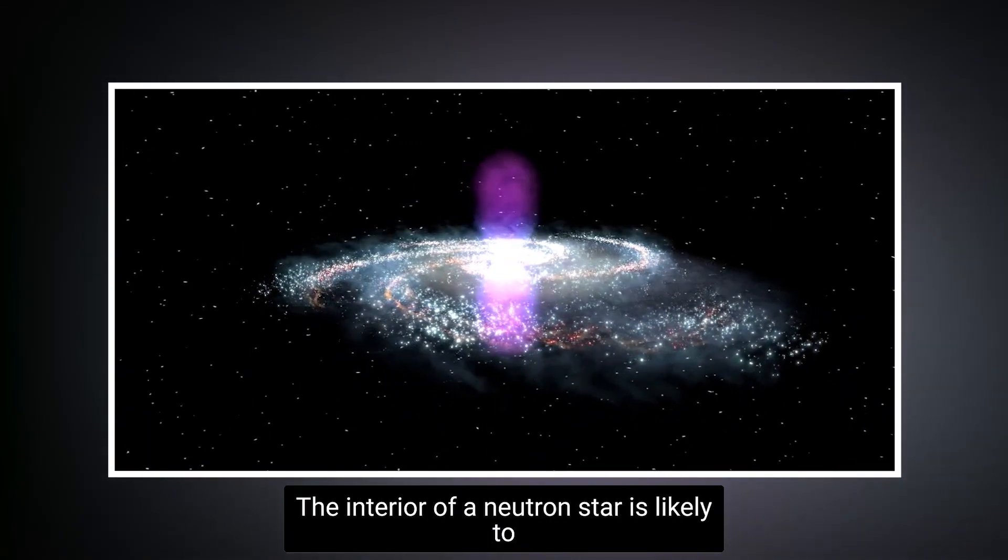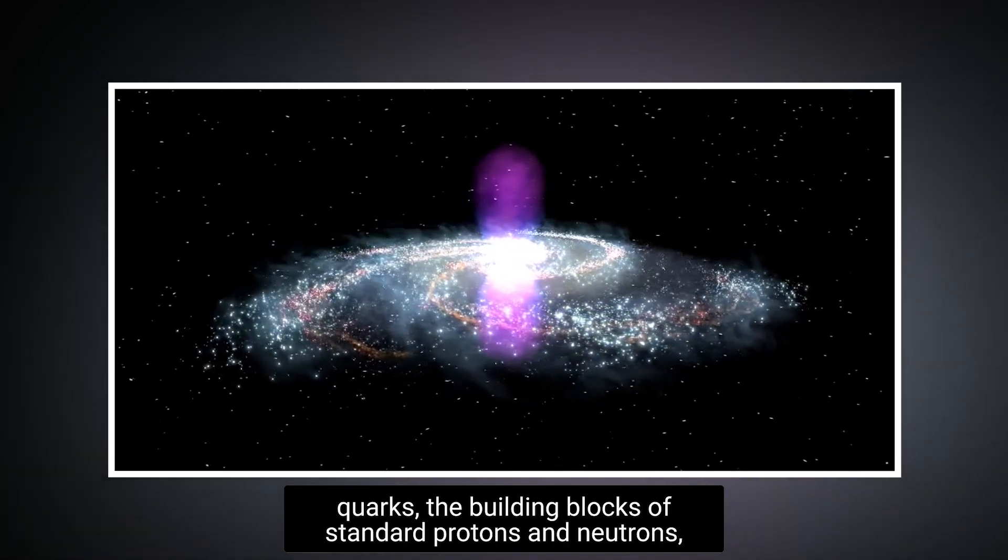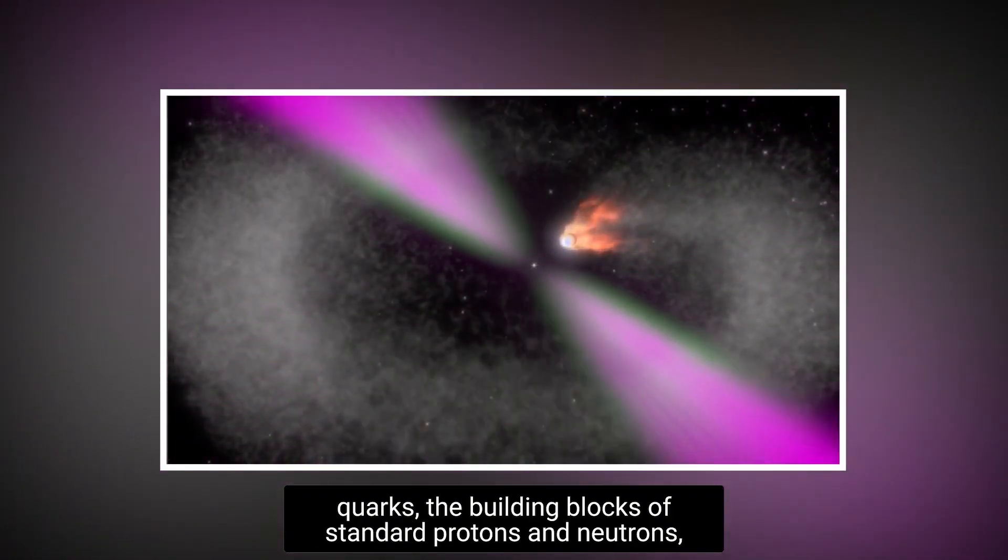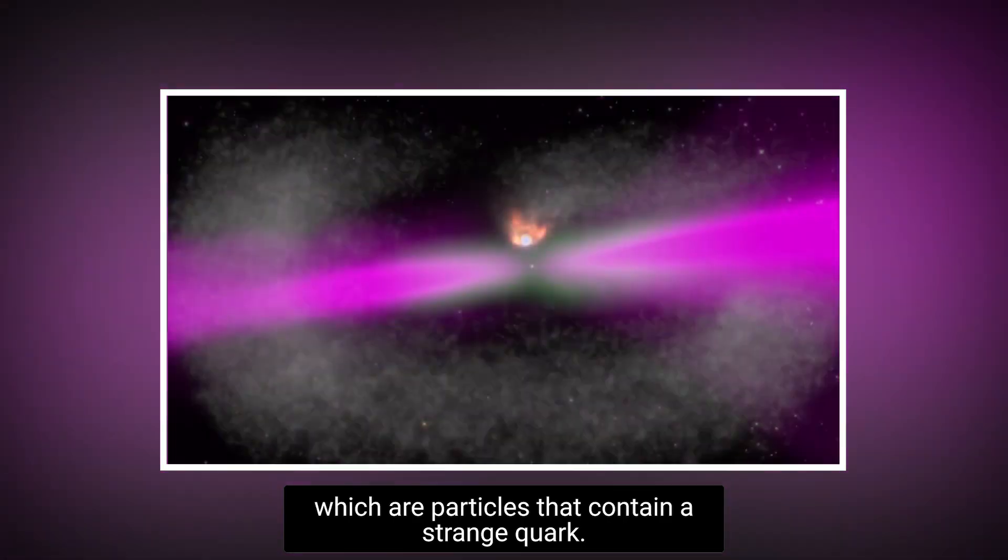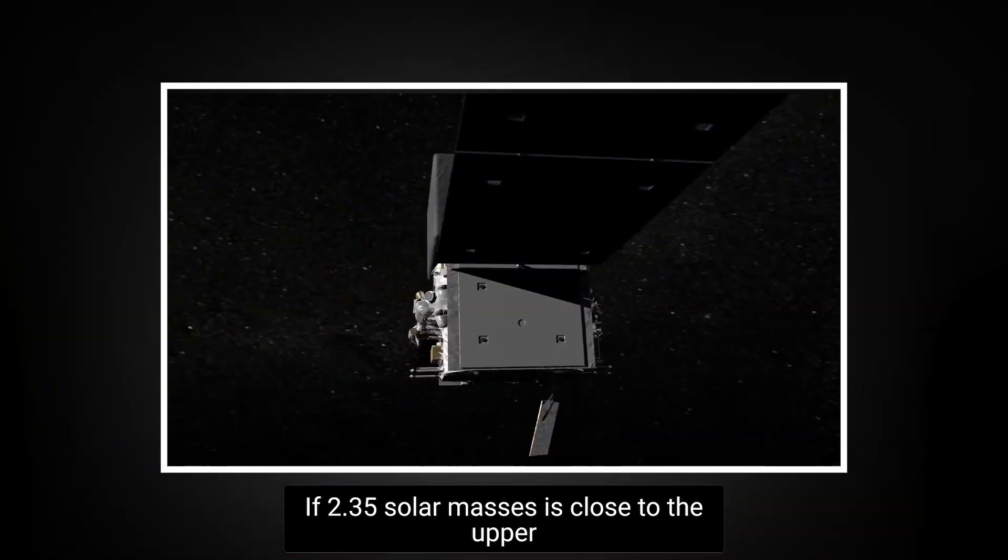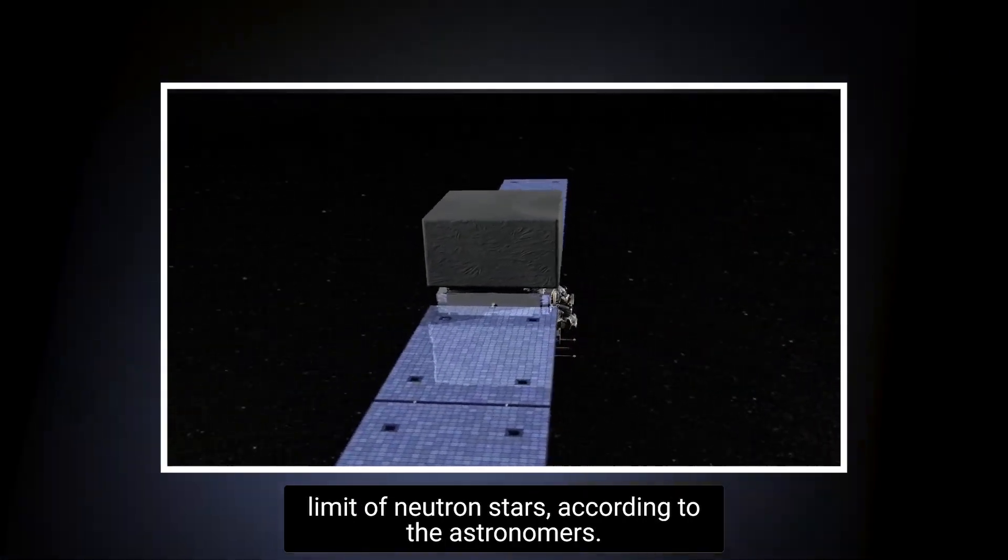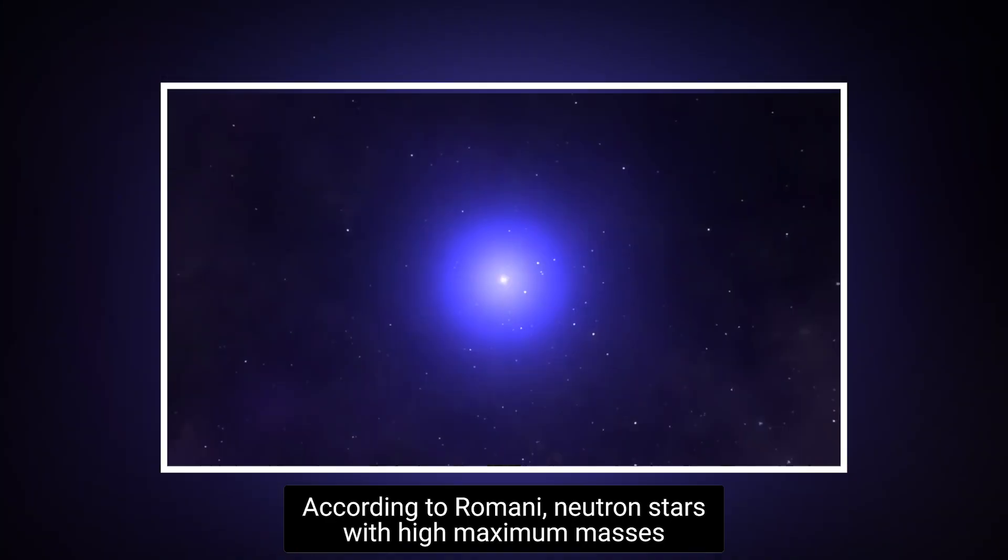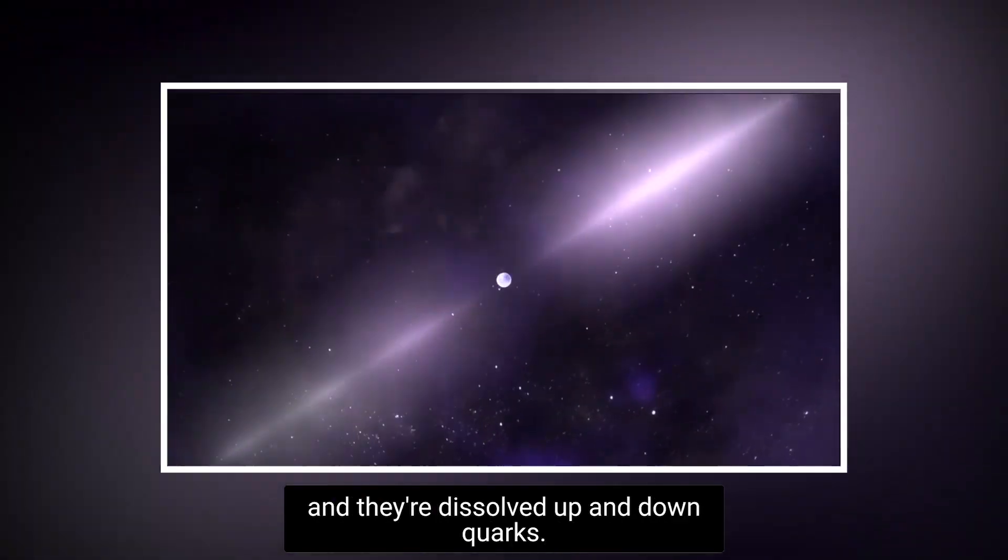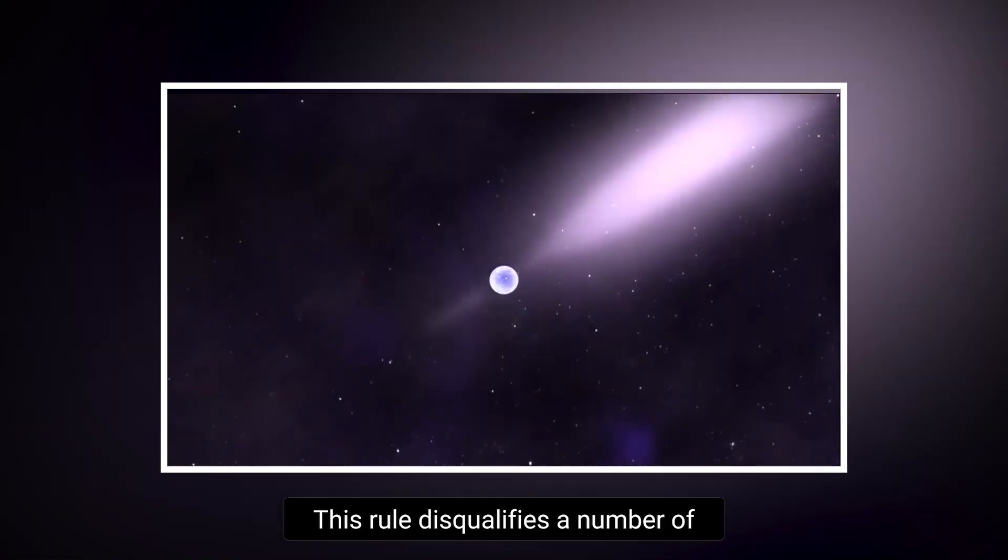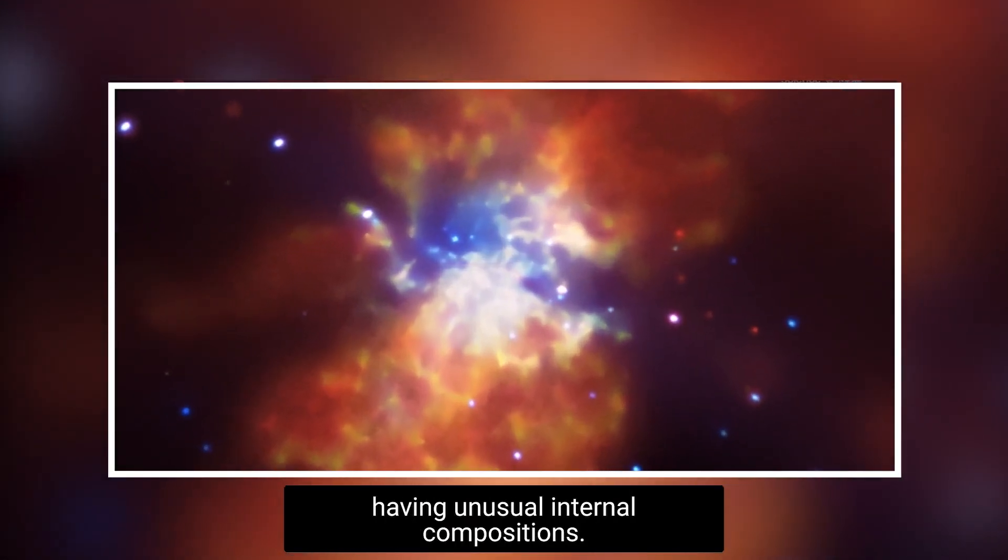The interior of a neutron star is likely to be made up of neutrons and up and down quarks, the building blocks of standard protons and neutrons, but not exotic matter like strange quarks or kaons, which are particles that contain a strange quark if 2.35 solar masses is close to the upper limit of neutron stars, according to the astronomers. According to Romani, neutron stars with high maximum masses are likely made up of a mixture of nuclei and their dissolved up and down quarks. This rule disqualifies a number of proposed states of matter, particularly those having unusual internal compositions.